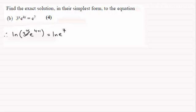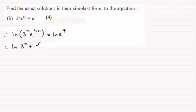We can use the addition rule here for when you get two values being multiplied together for a log. In other words, I can think of this as the natural log of 3 to the power x plus the natural log of e to the power 4x, and then this will equal the natural log of e to the power 7.